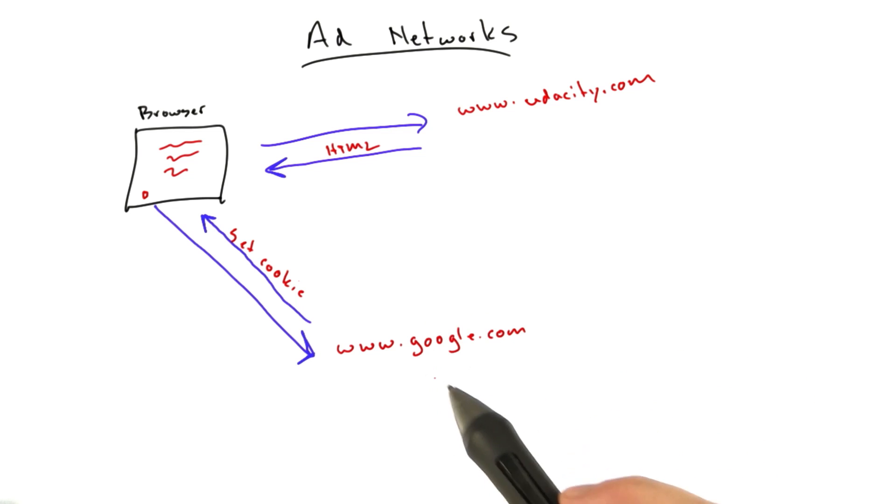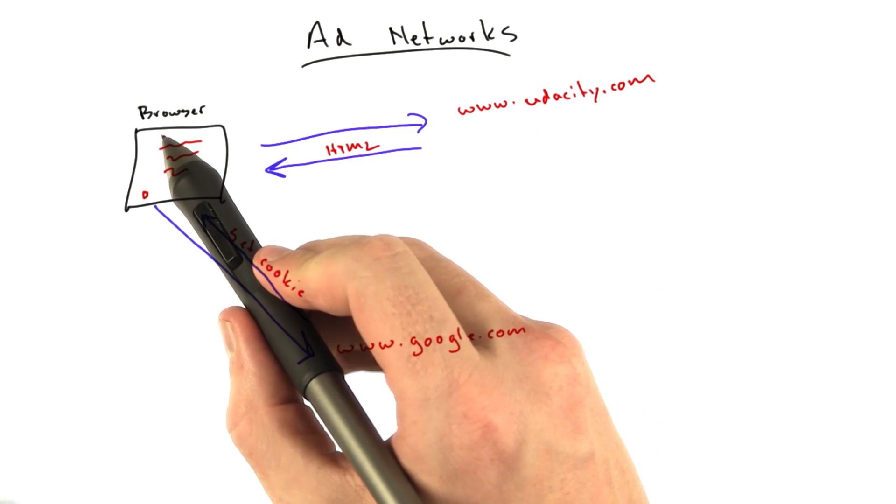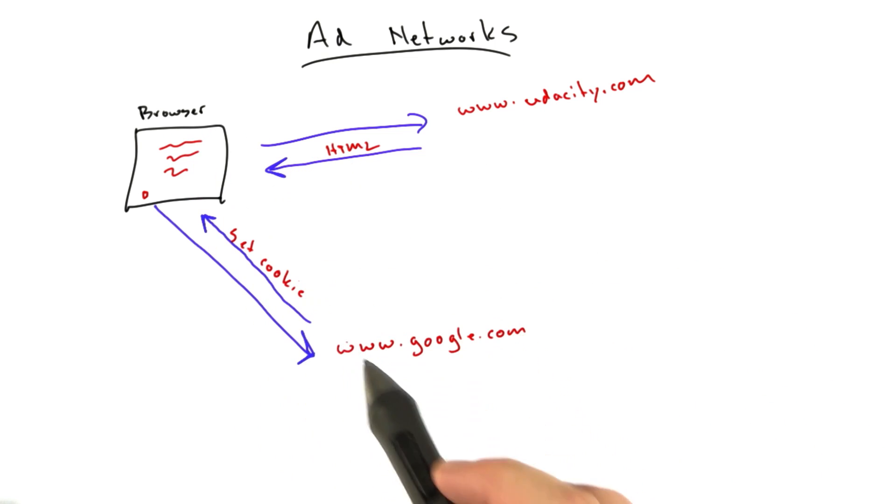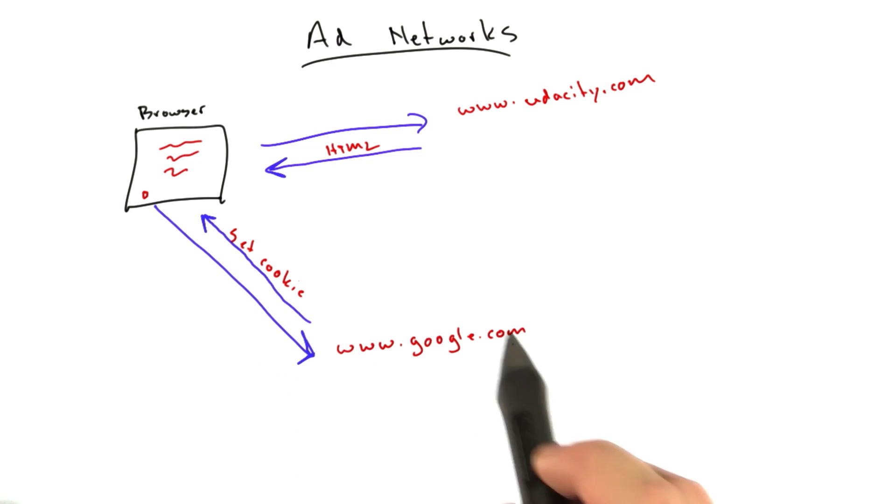And that's how they know whether you're a new user or a returning user. And so this is an example of a third party cookie. We went to udacity.com in our browser, but we received a cookie for google.com. Udacity doesn't receive those cookies, but Google will,